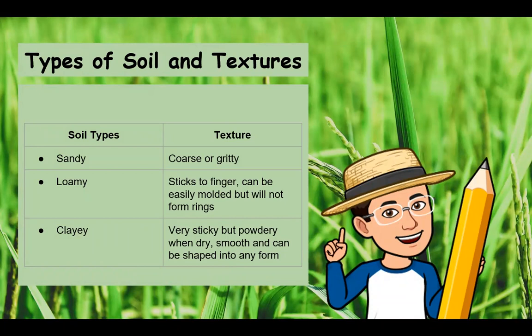Here are the textures of different soil types. If your soil is sandy, the texture is coarse or gritty. If the soil is loamy, the texture sticks to fingers when wet and can be easily molded but will not form rings. Clayey soil is very sticky but powdery when dry, smooth and can be shaped into any form.